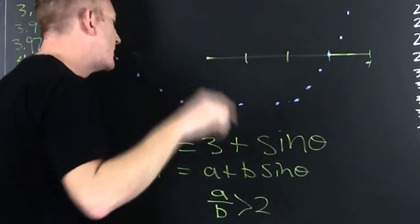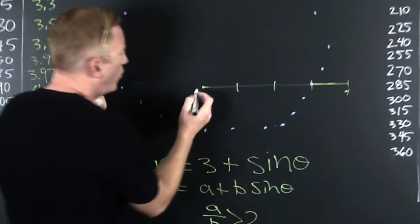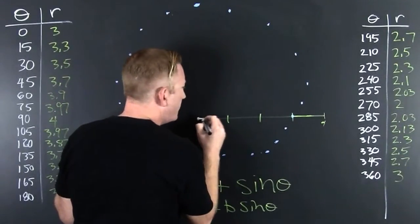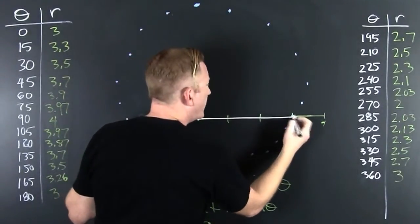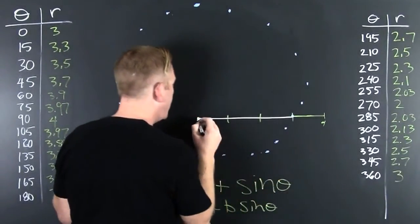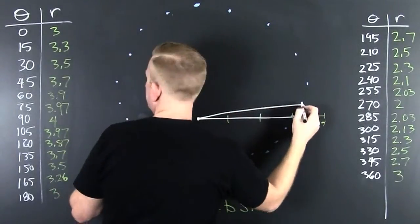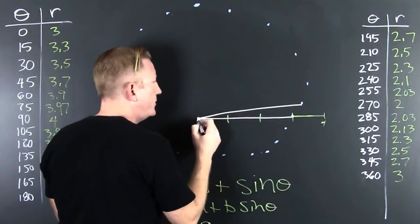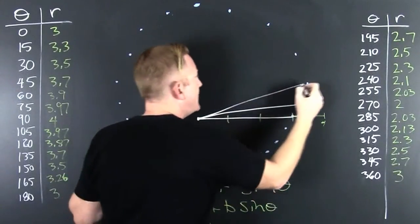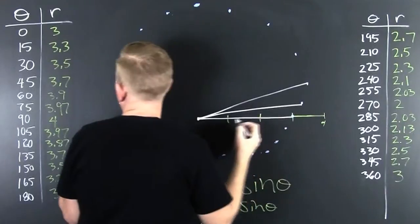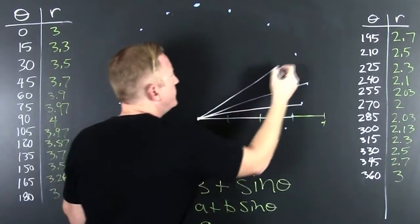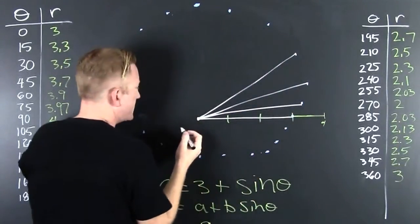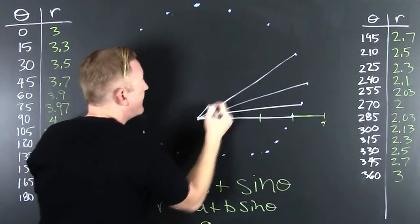When we're looking at these polar curves, when our angle is zero, we go out three units. At 15 degrees, that's 3.3 units. When we're at 30 degrees, that's 3.5 units. At 45 degrees, that's 3.7.